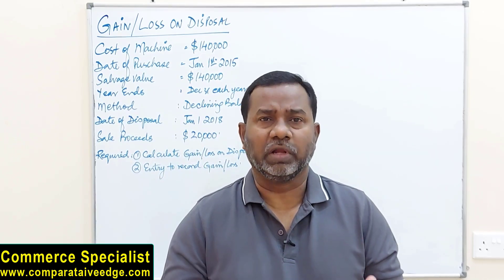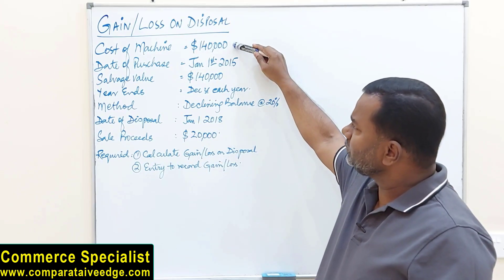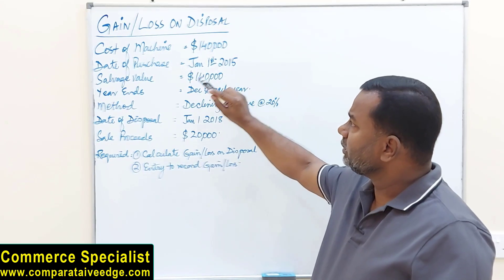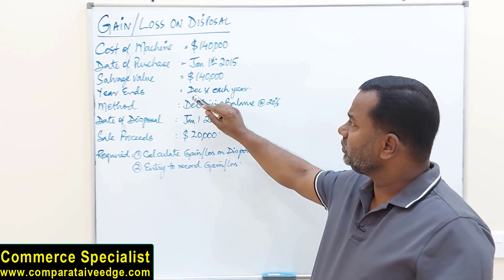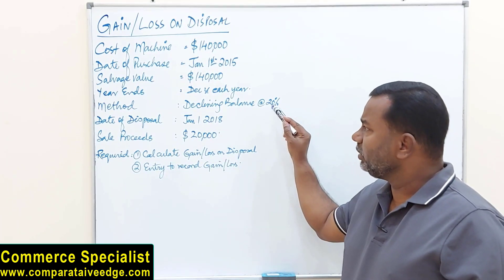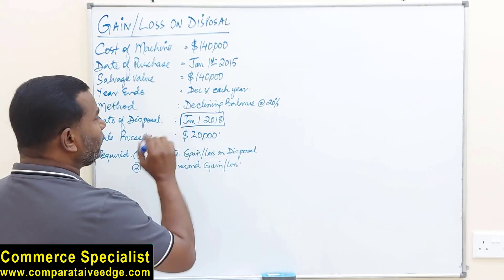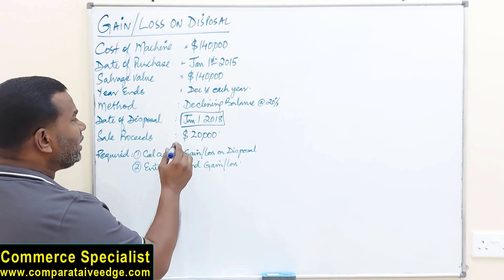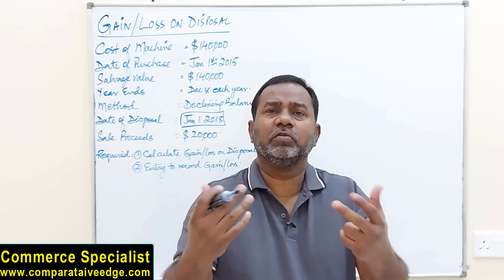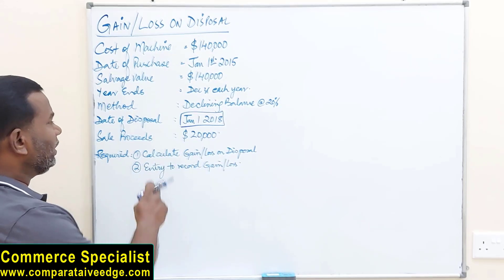Here there is one question. The cost of the asset is 140,000. Date of purchase — very very important — it was purchased on January 1st 2015. Salvage value is 140,000. The year ends on December 31st each year. The method used is the declining balance method at 20%. Date of disposal — very very important — you are selling it on January 1st 2018. Sale proceeds means how much money you got when you sold the asset: you got 20,000.